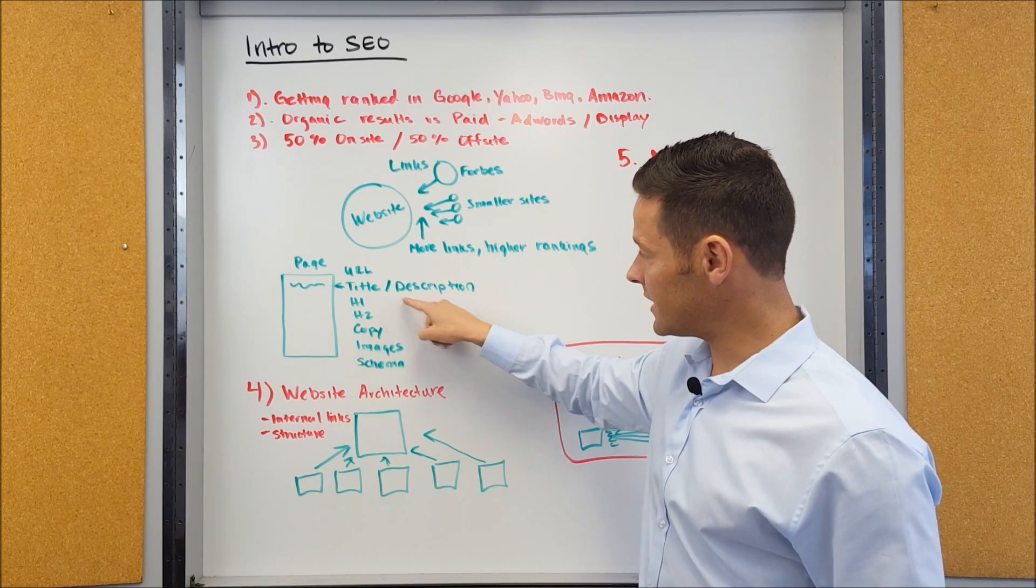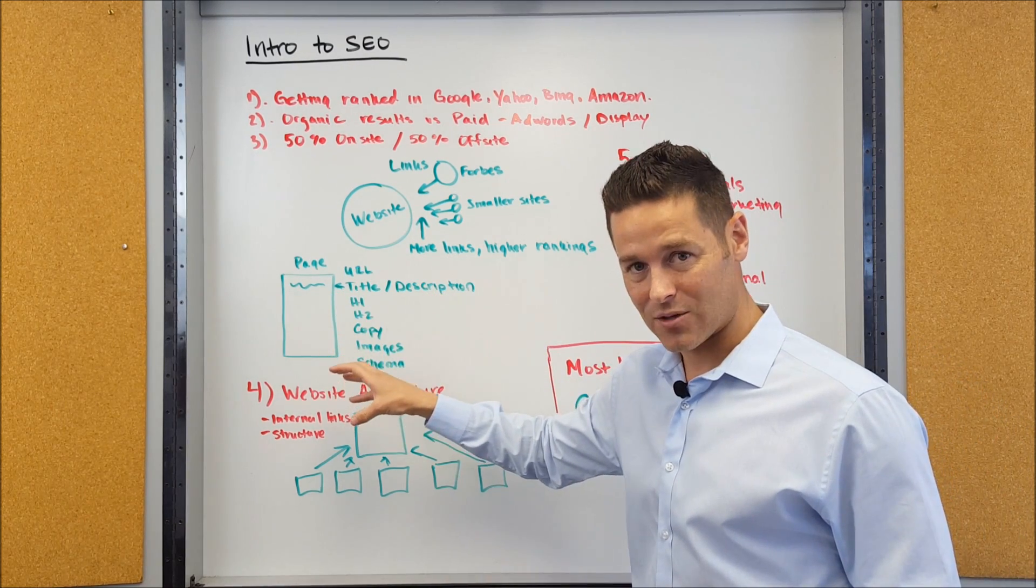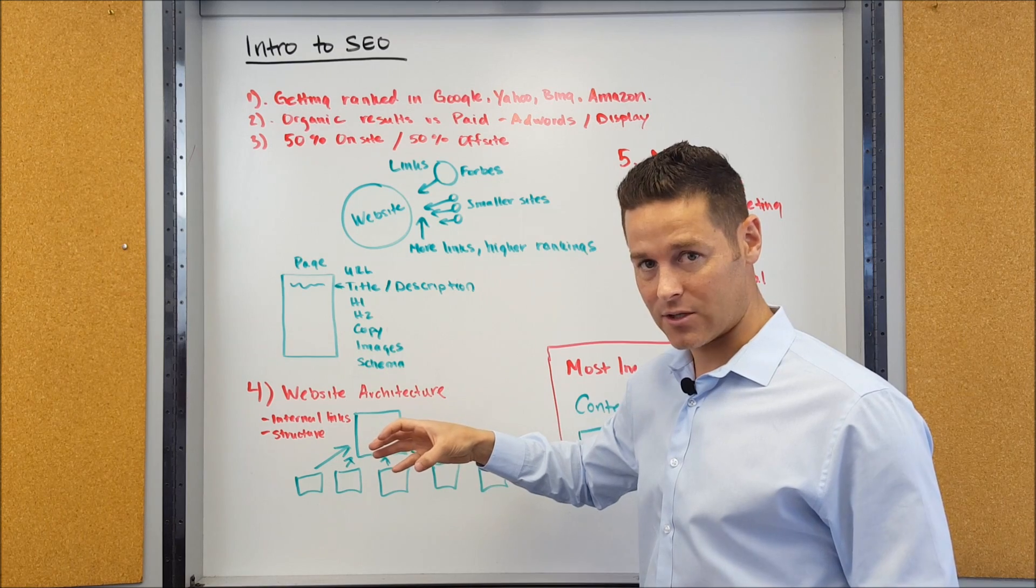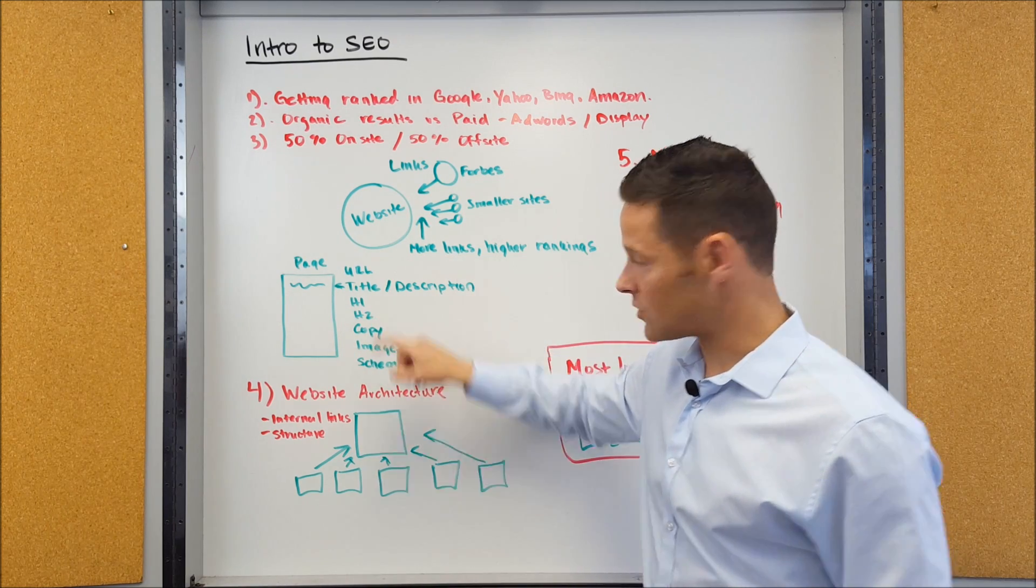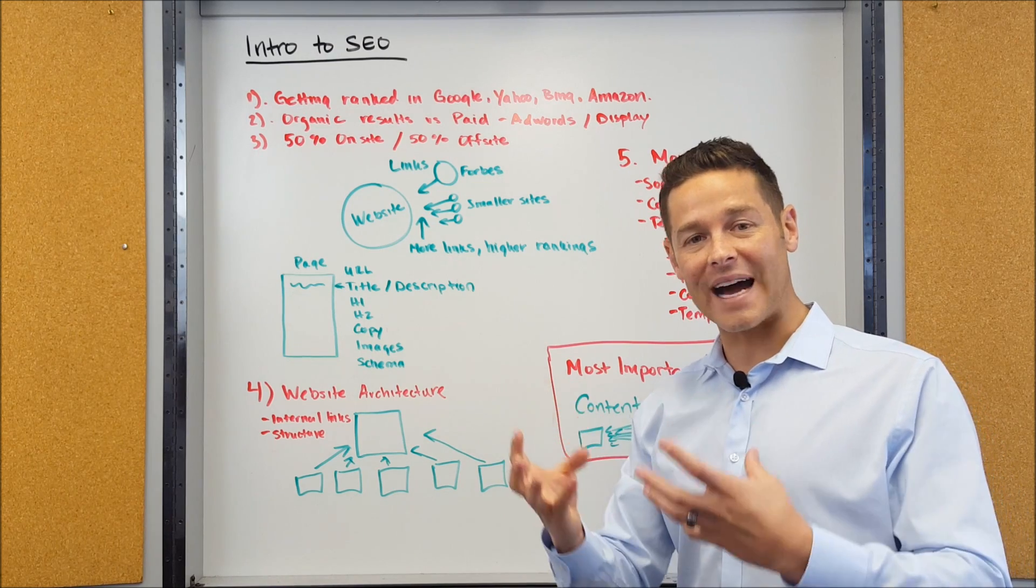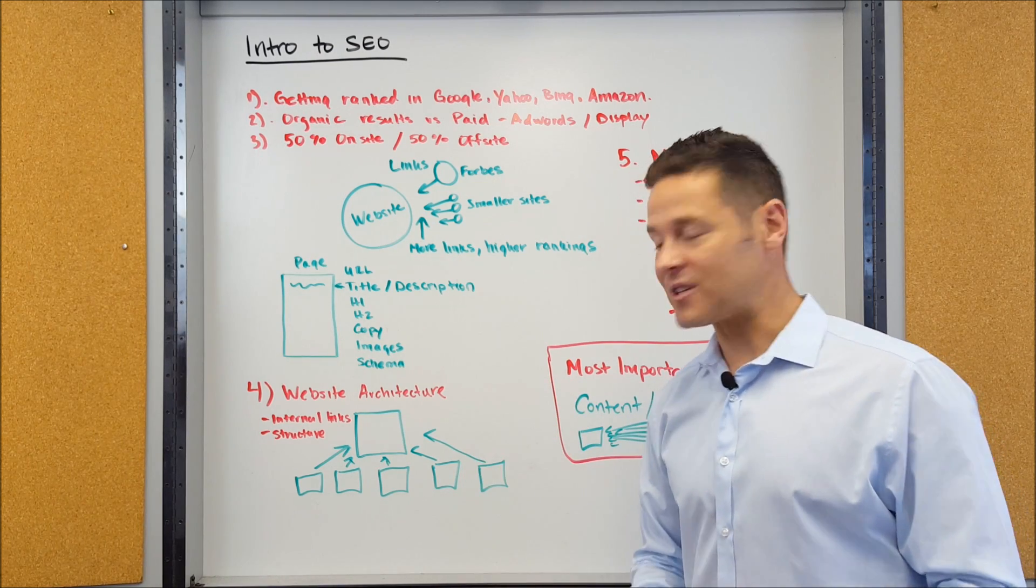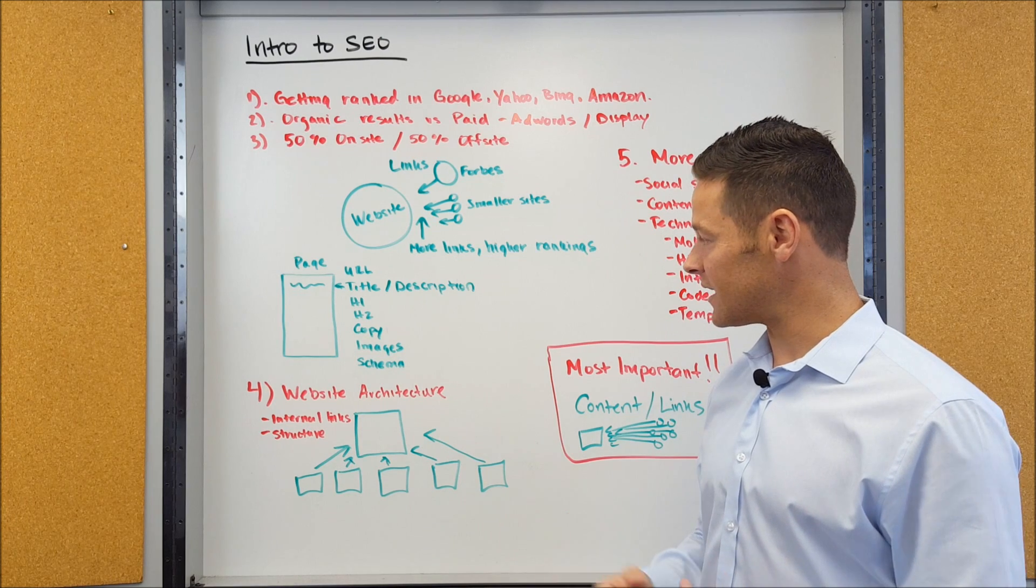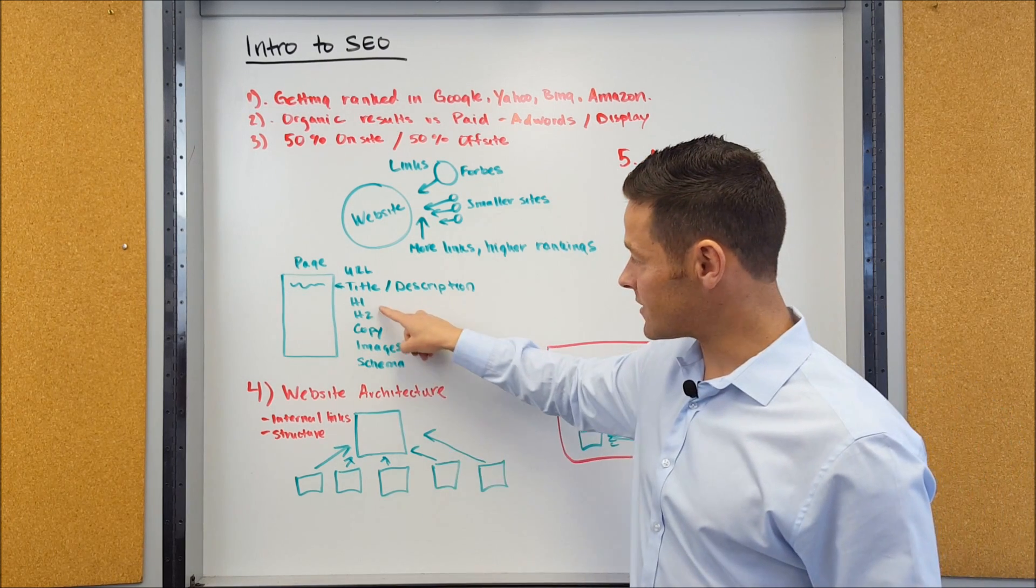These are both things that are only in the HTML of the page, so they're not visible on the page. The H1 and the H2, so those are the headings on the page. H1 and H2 are the way that you style them in the HTML so that Google kind of understands what they are. You want to have keywords in there as well.